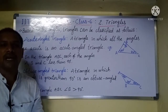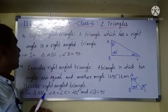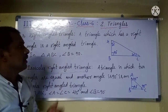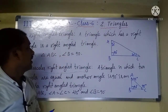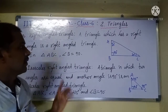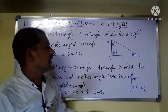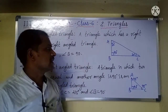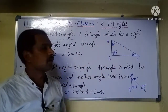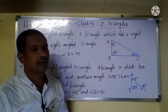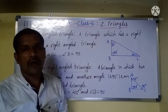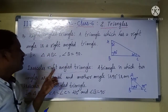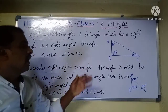The third type is a right angle triangle. A triangle in which one angle is equal to 90 degrees and the other two angles are less than 90 degrees is called a right angle triangle.